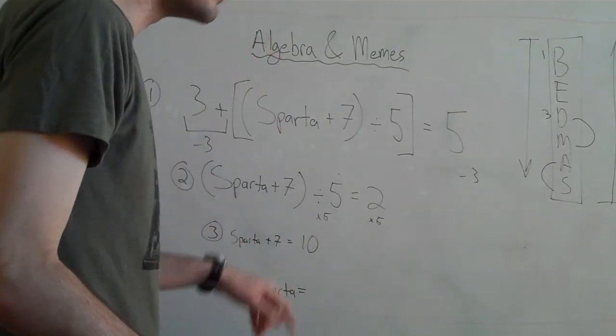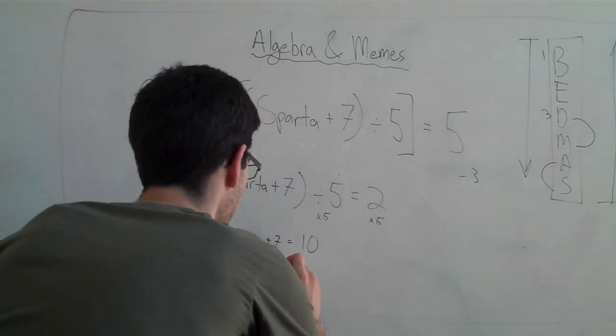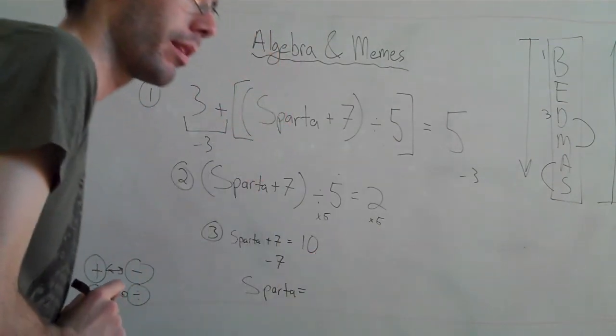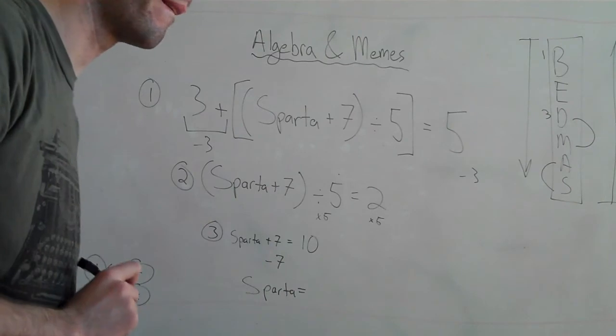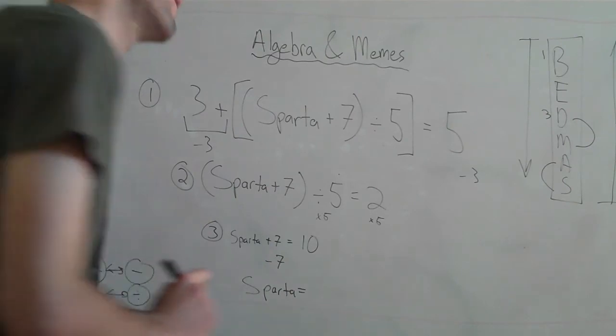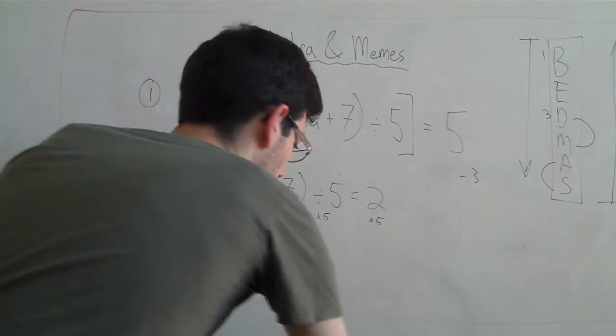3. It does equal 3. You know why? Because you already told me. Minus 7 on this side. What's on this side? 10. We did minus 7 over here. What are we going to do over here? 10 minus 7. Very good. What's 10 minus 7? That would equal 3. Perfect.